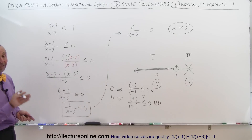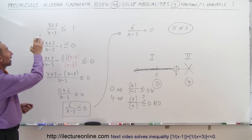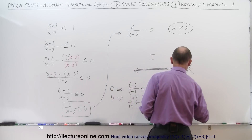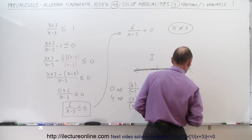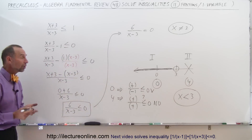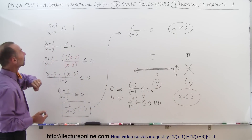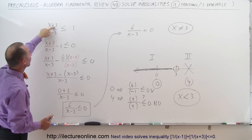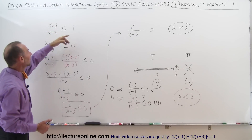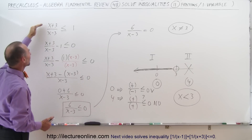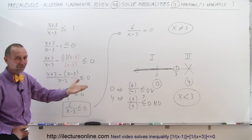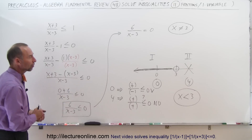Therefore, our solution is any number less than 3. We can do a quick check: plugging x equals 0 into the original inequality gives positive 3 divided by negative 3, which equals negative 1. Is negative 1 less than or equal to 1? Yes — so x equals 0 satisfies the original inequality and confirms our solution.